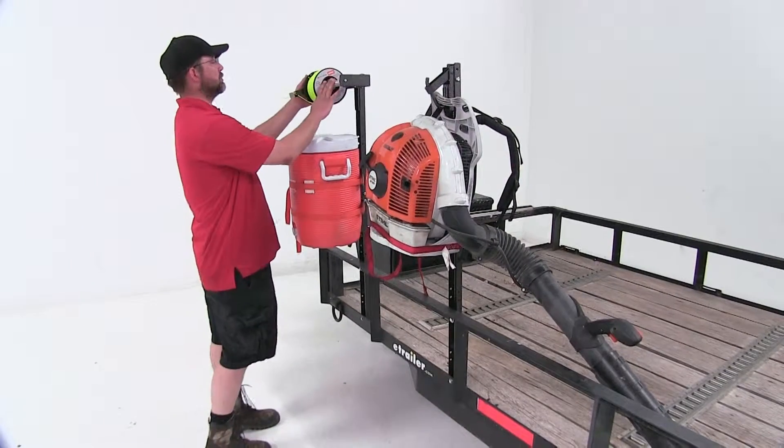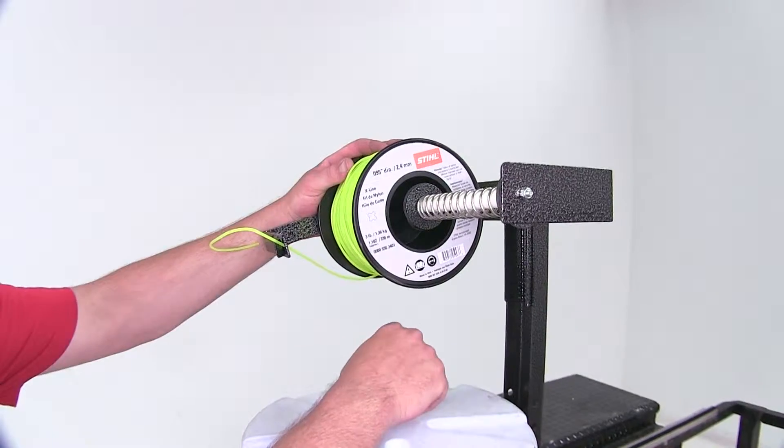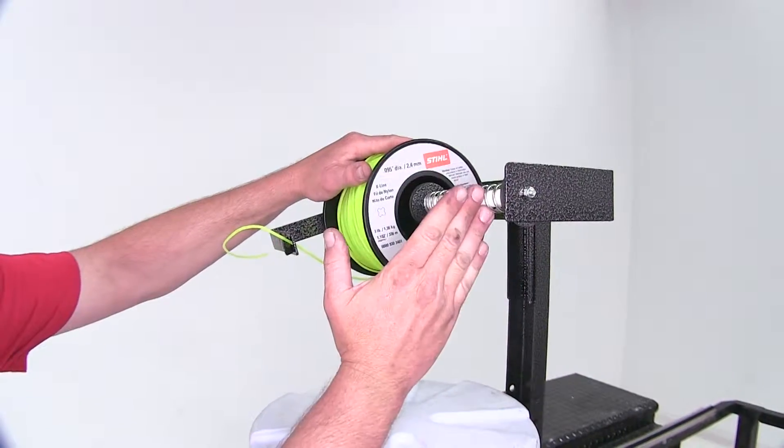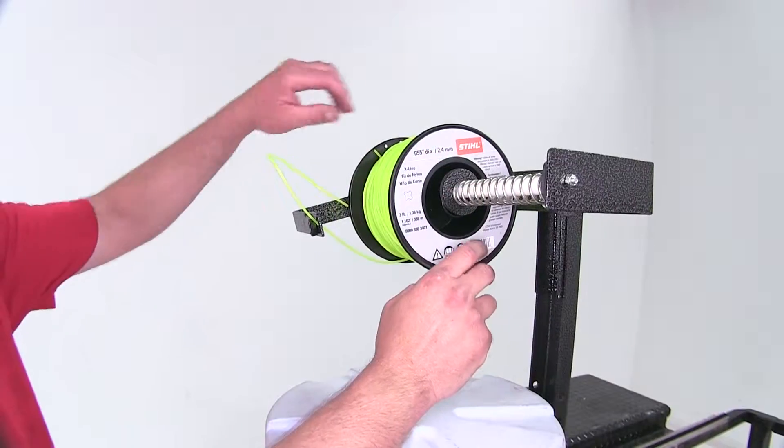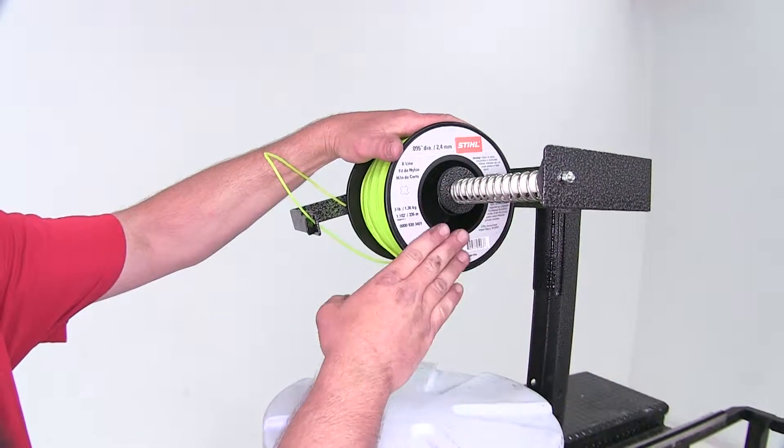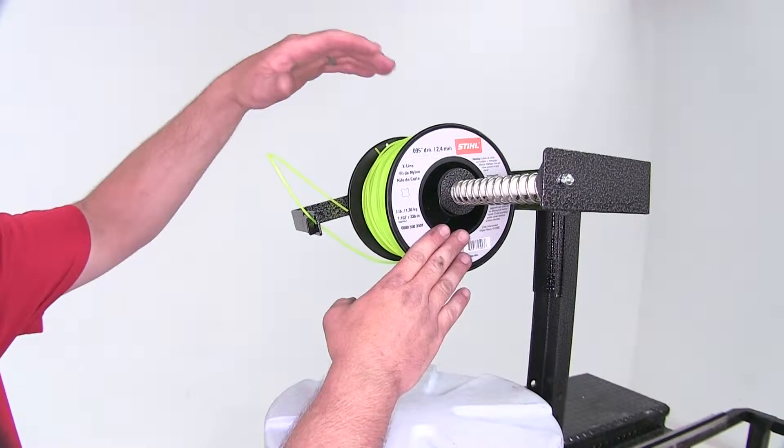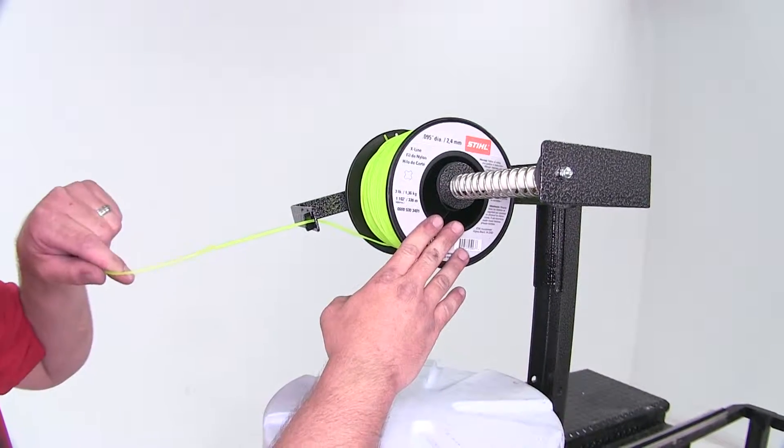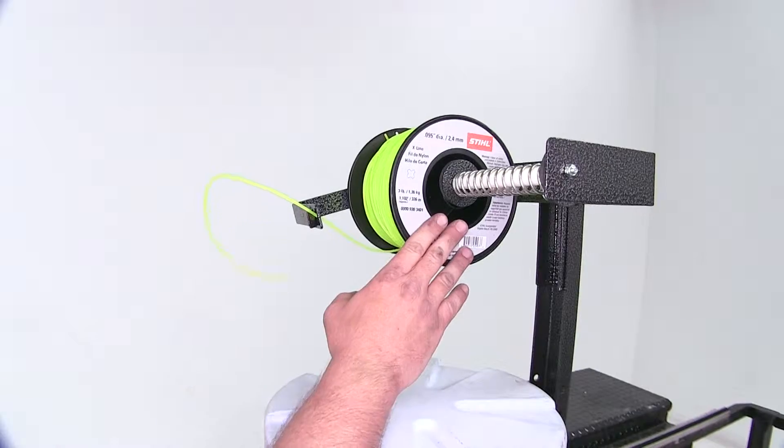Now here we have the trimmer spool rack. It will accept up to three and even five-pound spools. It is spring-loaded to help hold our spool in place so it doesn't spin and come free, allowing extra string to come out when traveling down the road.